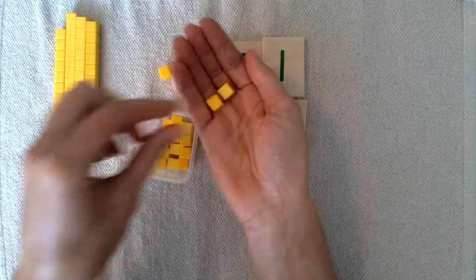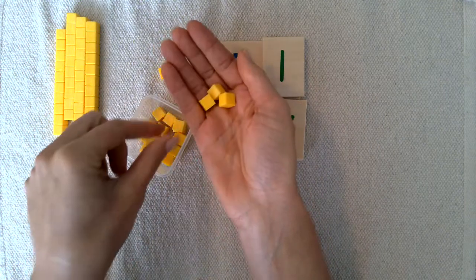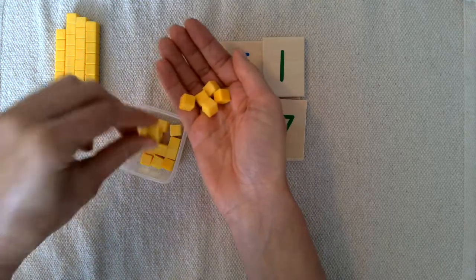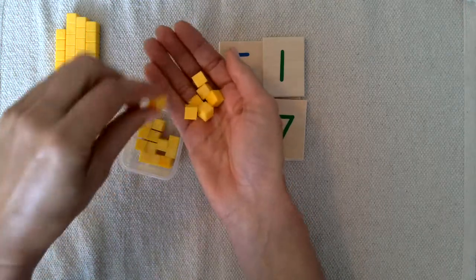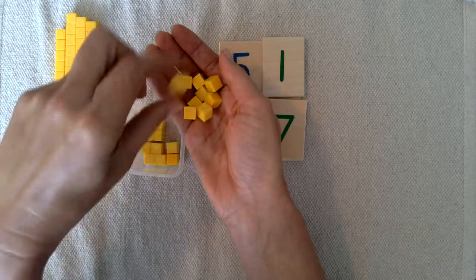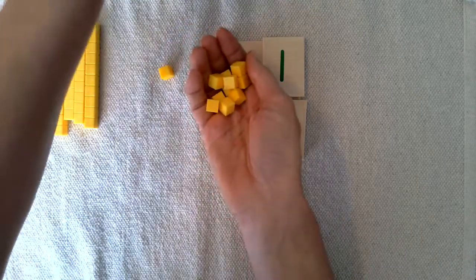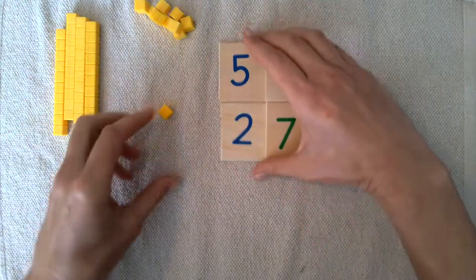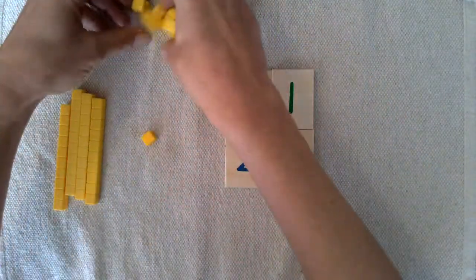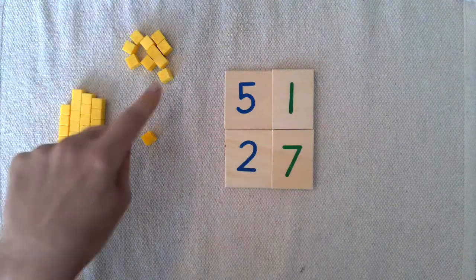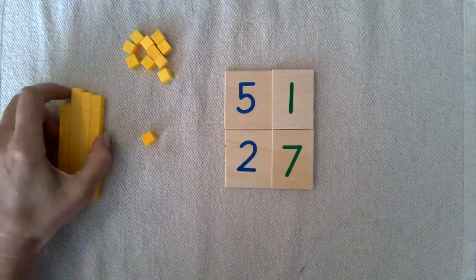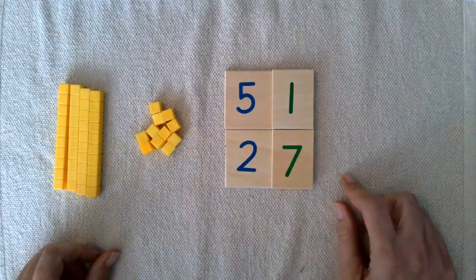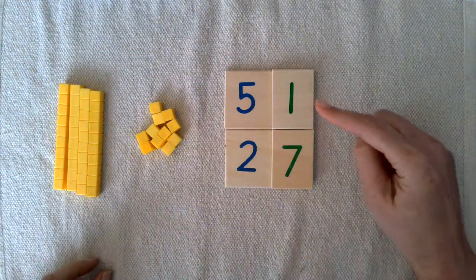And in exchange the banker counts out 10 ones, and I like them to count it out into a container or into their hand: 1, 2, 3, 4, 5, 6, 7, 8, 9, 10. And then I also have them put it separate from the one that they already had, just to make sure that that's the correct amount. Let's put them together. Oh, now we have enough ones.